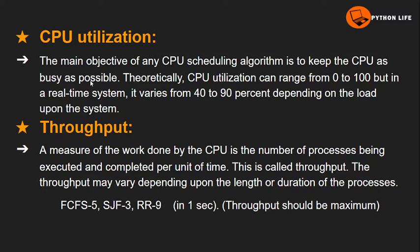The first criterion is CPU utilization. When a process moves from the ready state to the running state, the CPU executes it. If during execution an I/O operation is needed, the CPU becomes idle and another process gets the CPU. The main objective of any CPU scheduling algorithm is to keep the CPU as busy as possible, maximizing CPU utilization.